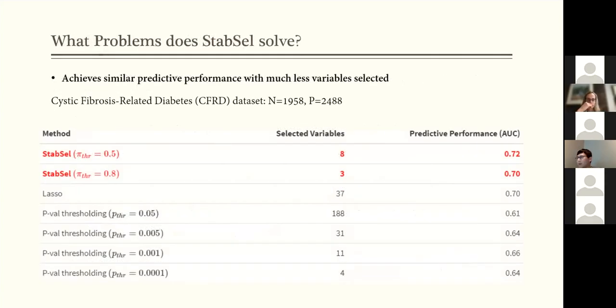So we can see here that using this approach, we can achieve similar performance, but with much fewer variables. So the chosen variables here are the ones that perform consistently in different subsets of the data. So we can see that stability selection here in red are on the top, and they have similar performance with lasso, but tends to select much fewer variants.